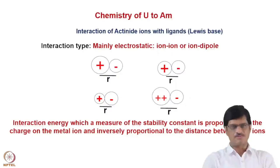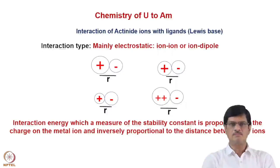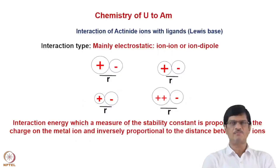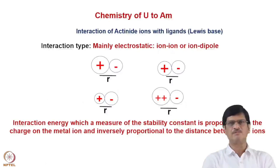We have previously discussed the actinides, their production, discovery, and electronic configuration. Now, the actinides have relevance in the nuclear fuel cycle, so we need to understand their chemistry, particularly those relevant for the nuclear fuel cycle. In this lecture, I will be discussing the chemistry of uranium to americium — that means uranium, neptunium, plutonium, and americium — these four elements mainly have great relevance in the nuclear fuel cycle.